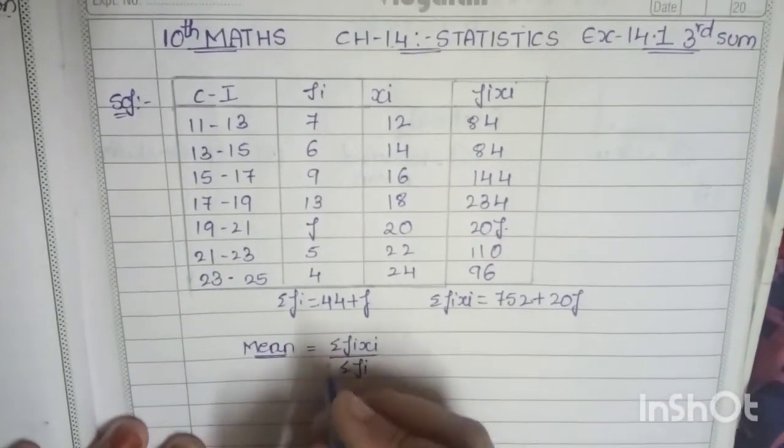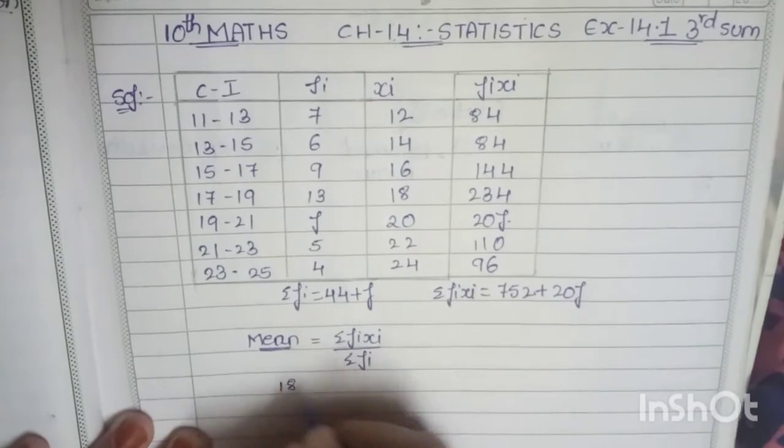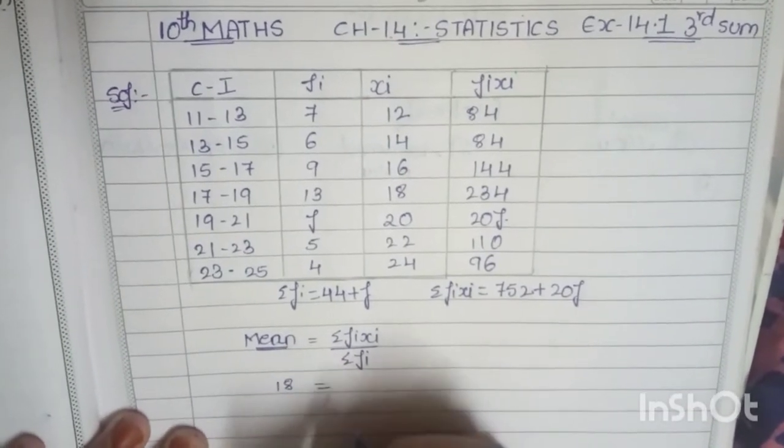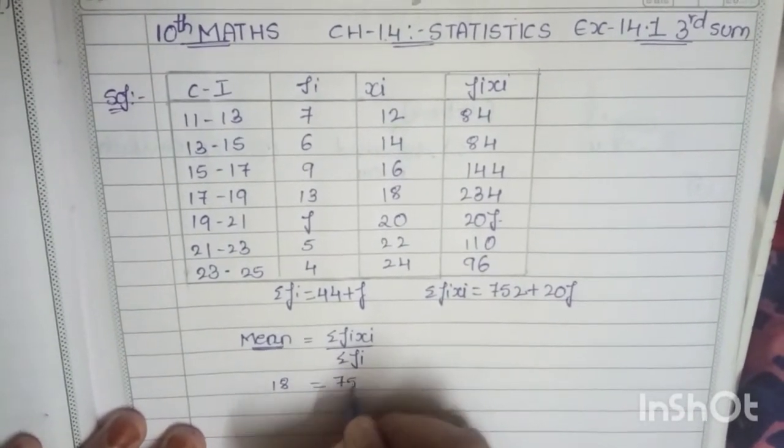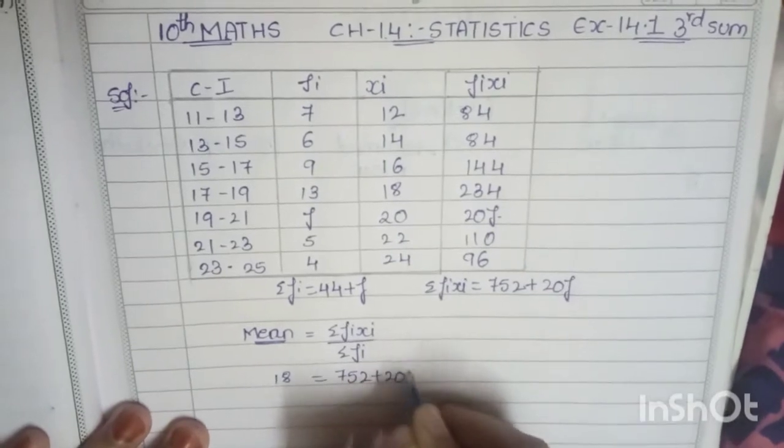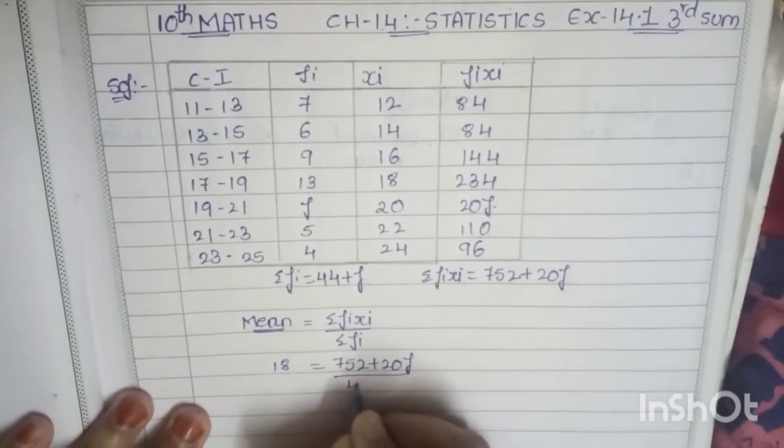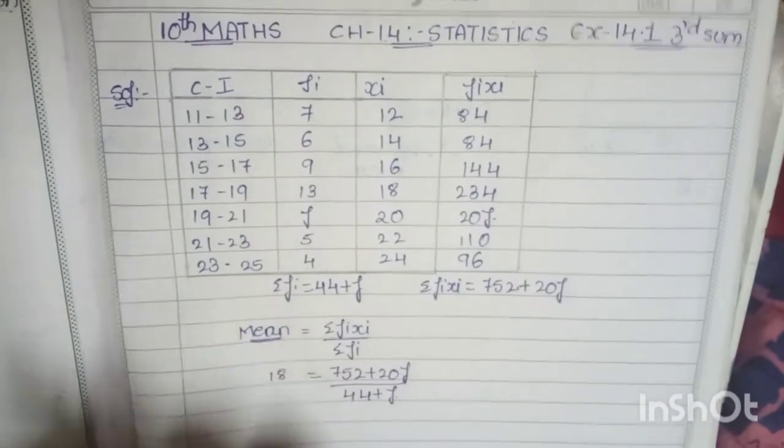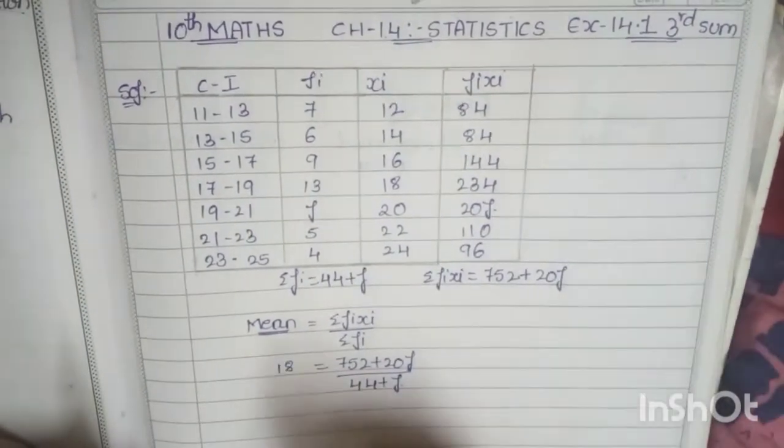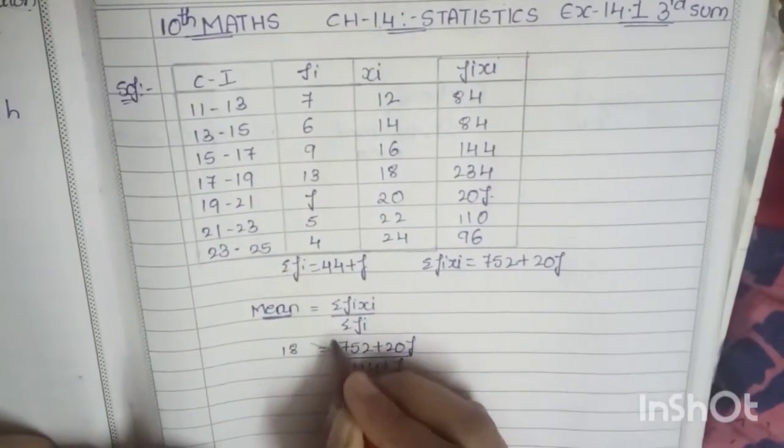They have already given us the mean value - you observed in the question that is 18. So we have to equate with 18. That is 752 plus 20f by 44 plus f.